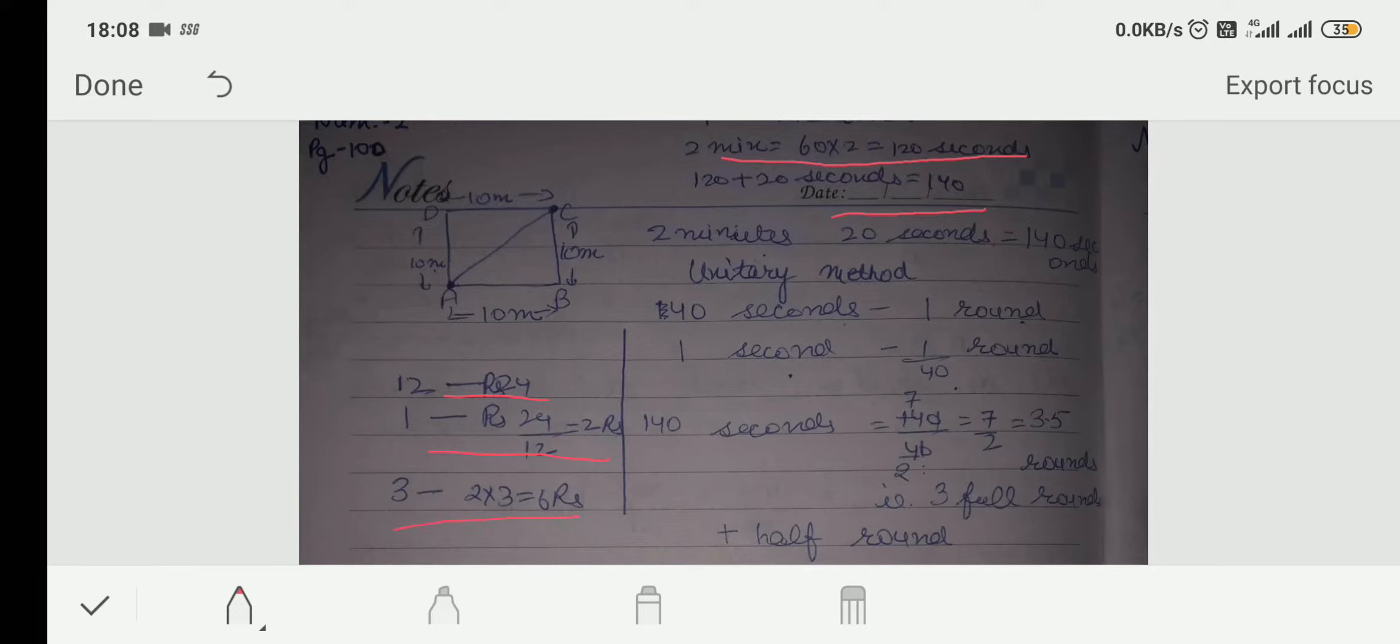Similarly, here we will do 40 seconds. He completes 1 round. In 1 second, he will complete 1 by 40 rounds. In 140 second, he will complete 7 by 2 or 3.5 rounds.